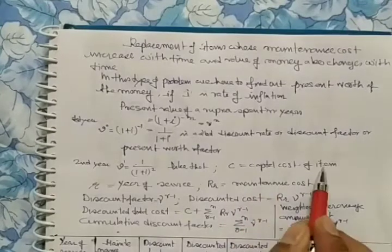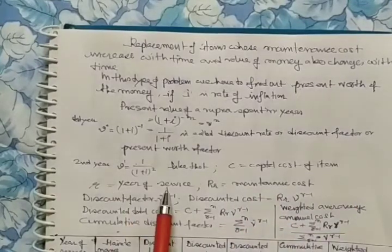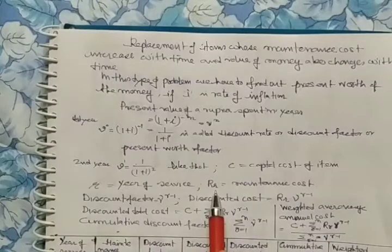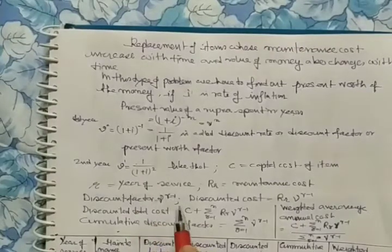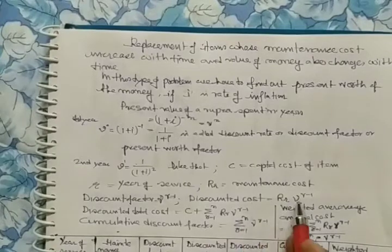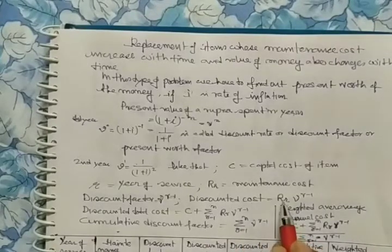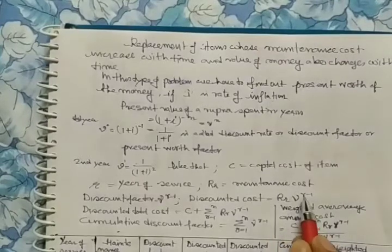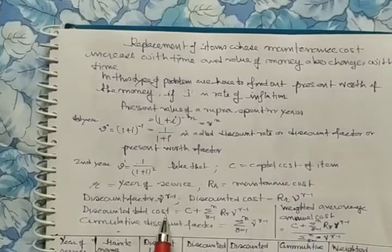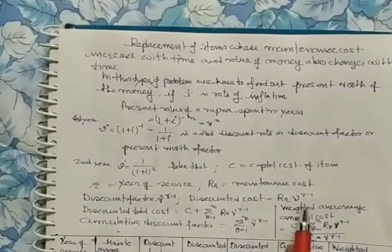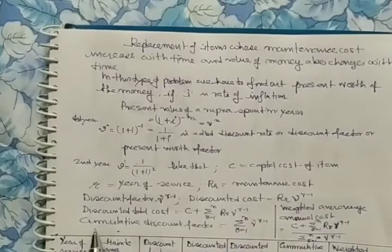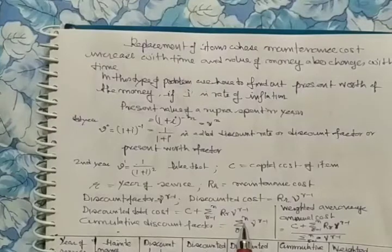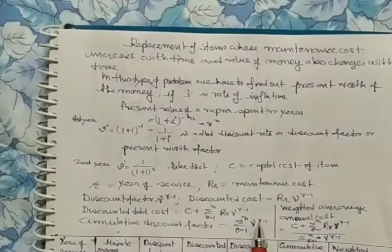C is the capital cost of the item. R (with suffix r) is the year of service and maintenance cost. The discount factor is v to the power (r minus 1). The discounted cost is capital R suffix r multiplied by v to the power (r minus 1).